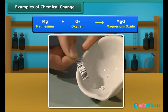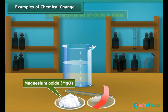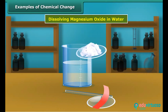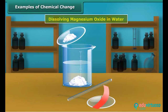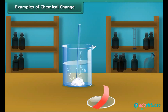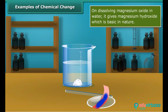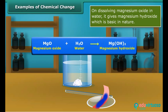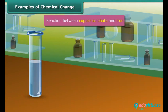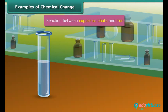This ash has different properties than magnesium, therefore burning of magnesium is a chemical change. When magnesium oxide is dissolved in water, magnesium hydroxide is obtained, which turns red litmus blue. This suggests that magnesium hydroxide is basic in nature.